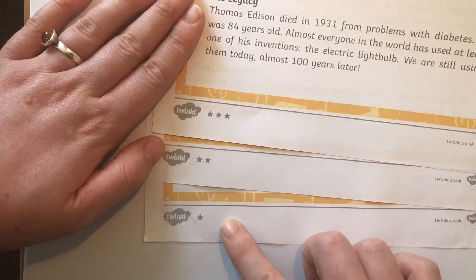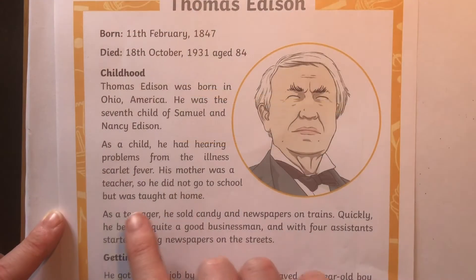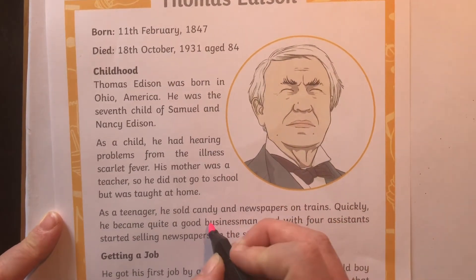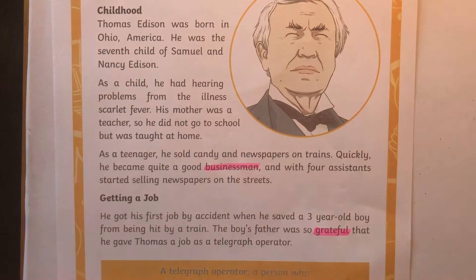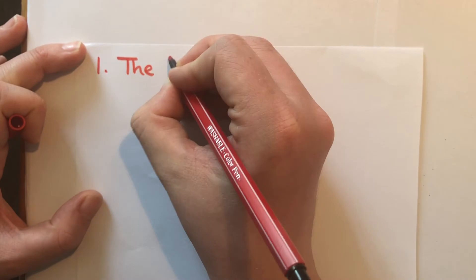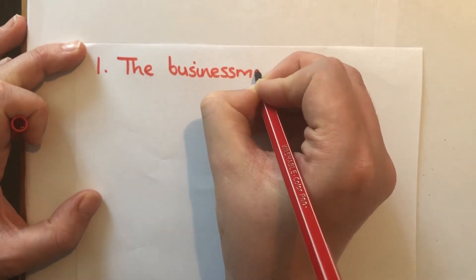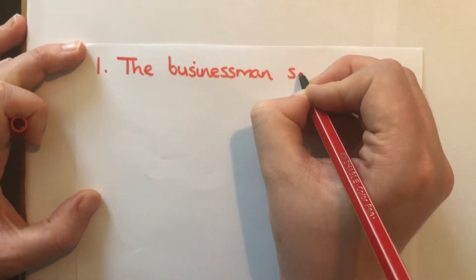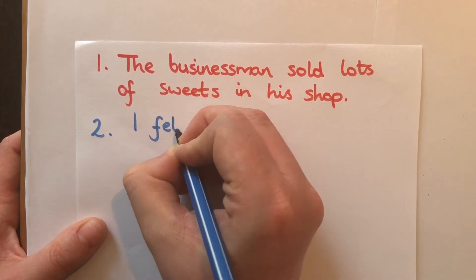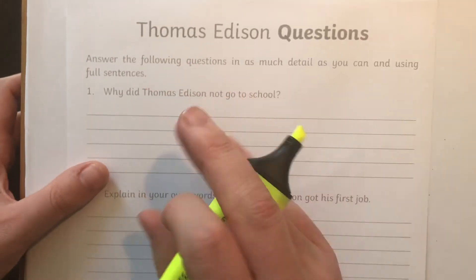First, you can choose which version you want to use — one star is the easiest, three stars is the most challenging. Then a good starter activity is to read through the text and highlight interesting or unusual words. You can discuss the meaning of the words with your child and then get them to have a go at writing some sentences including those words.